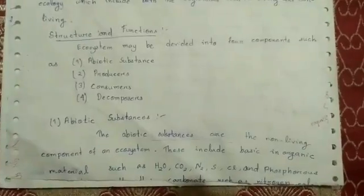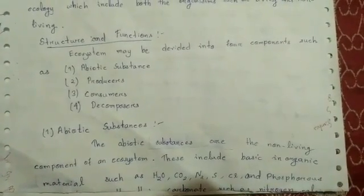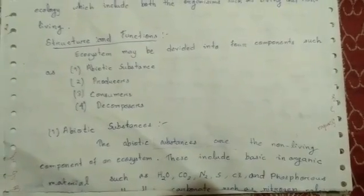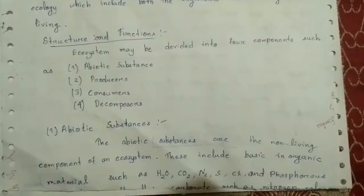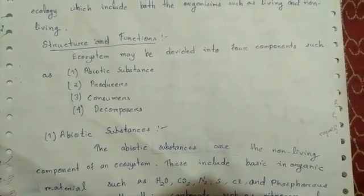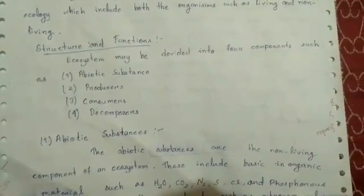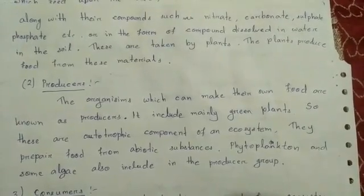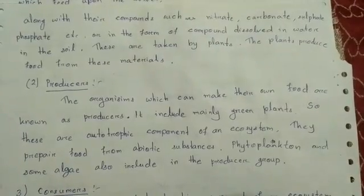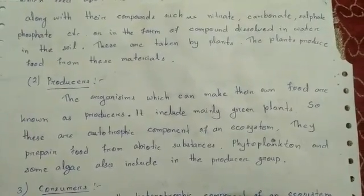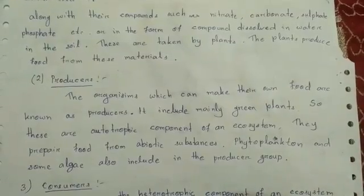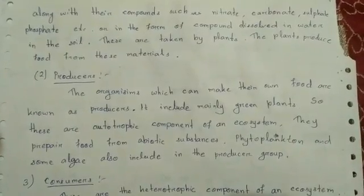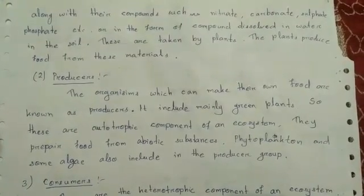The first component is the abiotic component. Abiotic substances are the non-living components of an ecosystem. This includes basic inorganic materials such as water, carbon dioxide, nitrogen, sulfur, chlorine, and phosphorus, along with their compounds such as nitrate, carbonate, sulfate, and phosphate, either dissolved in water or present in the soil. These are taken up by plants, which produce food from this material.